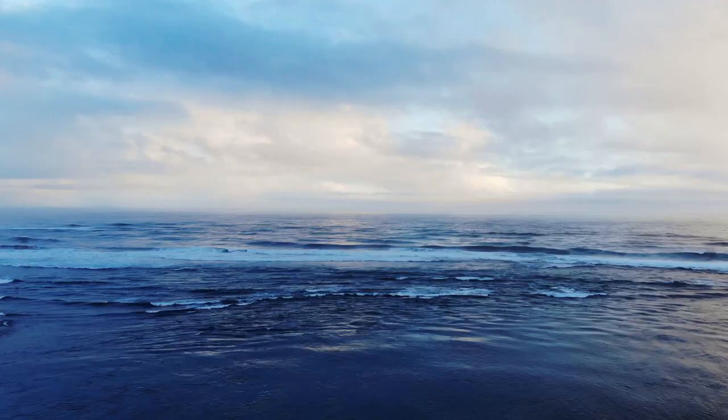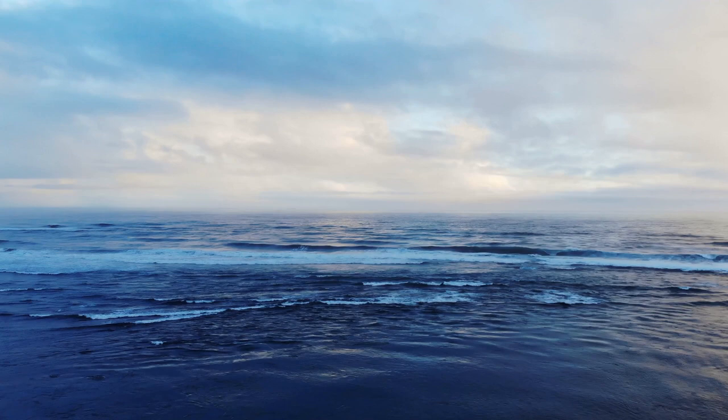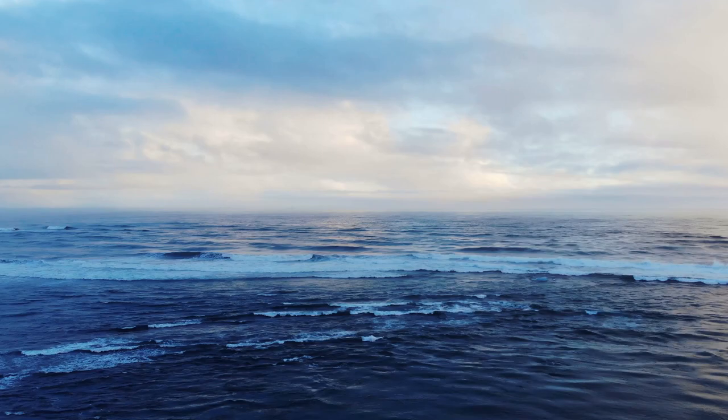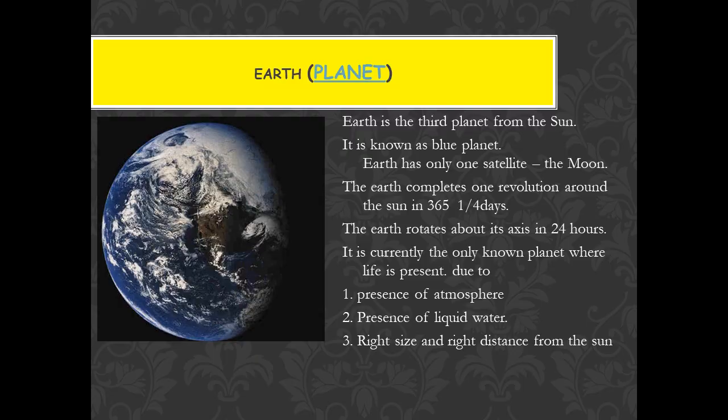All gases support life on Earth, like nitrogen, oxygen, carbon dioxide, and helium, in the right proportion to support life. The most important thing is water, which is in liquid form and is important for our life. The third important factor is the right size and the right distance from the sun.